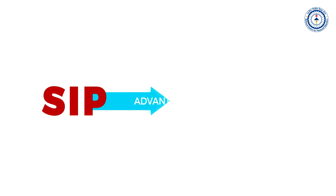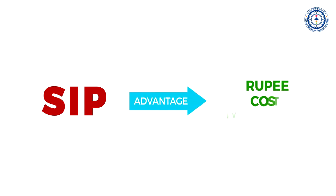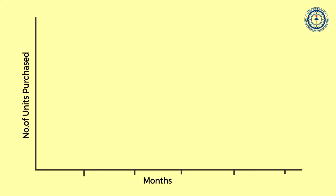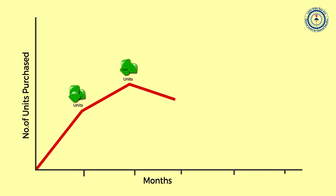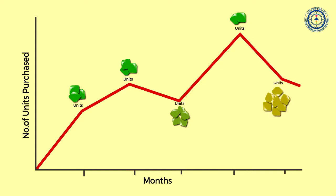The biggest advantage of SIP is rupee cost averaging, which means that your cost gets averaged. When the market rises, your existing units gain more value, and when the market drops, you gain more units for your monthly amount, thus averaging out your purchase price.